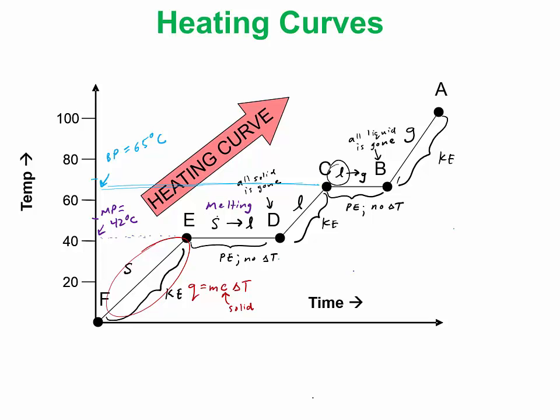When you get from E to D, you cannot use the heat equation because there's no delta T. From E to D, you're going to have to use Q equals N times the enthalpy of fusion, and N is in moles. These heats of phase changes are usually in kilojoules per mole. When you multiply the two, you'll wind up with just joules or kilojoules.